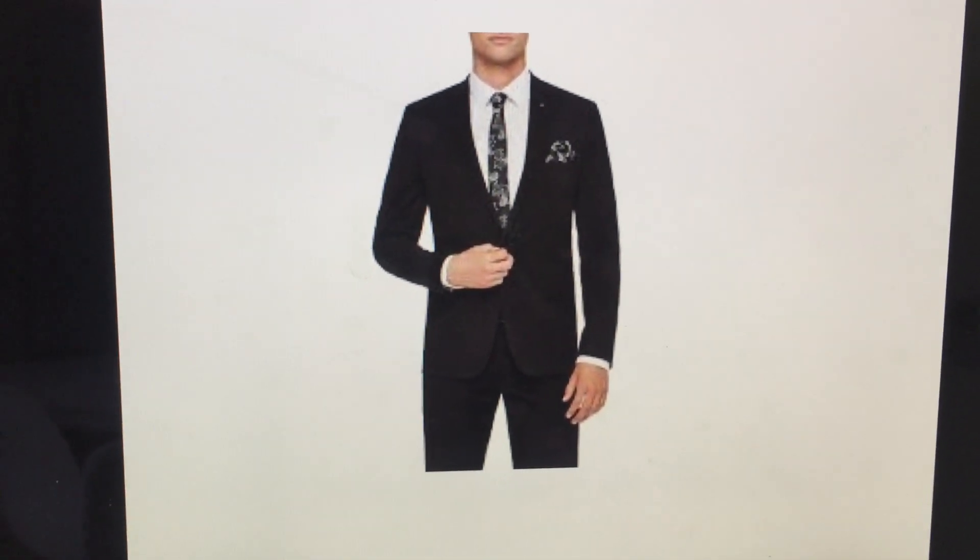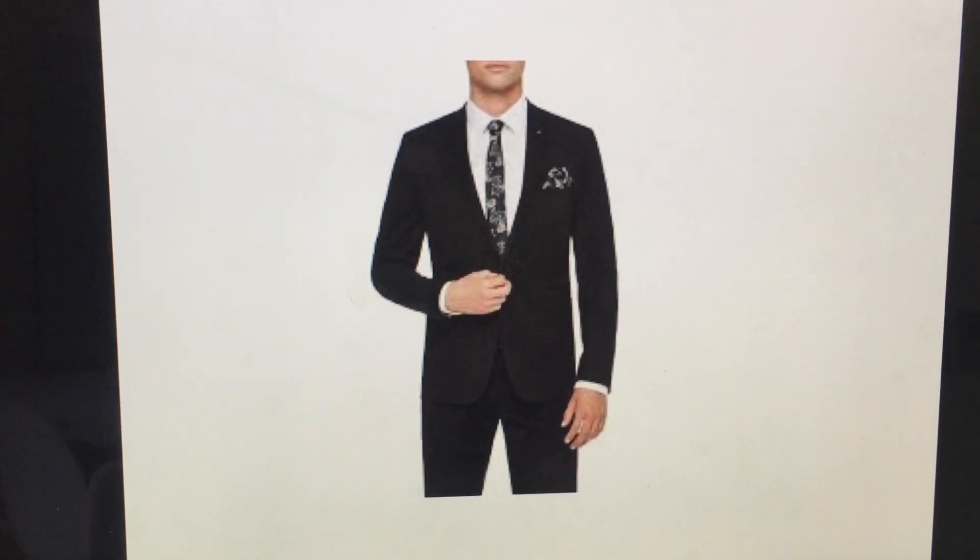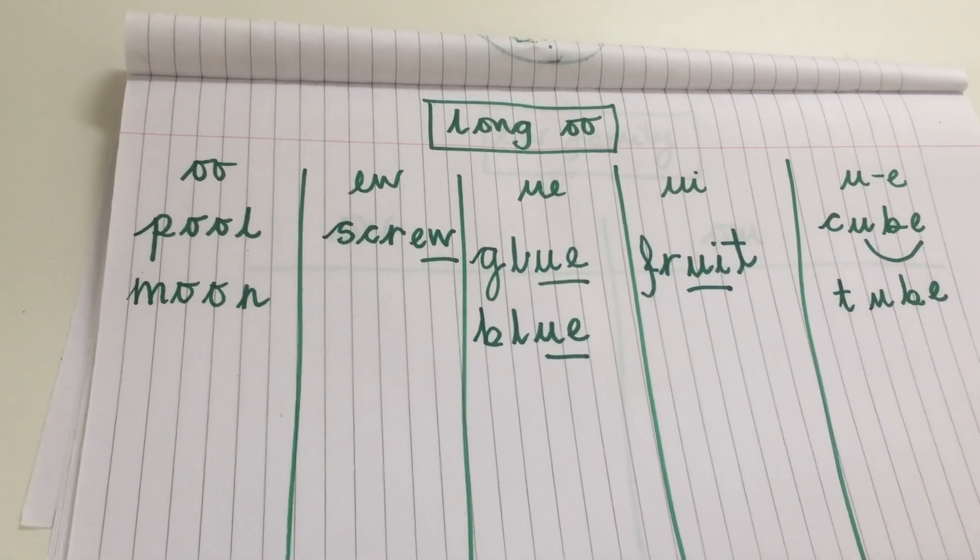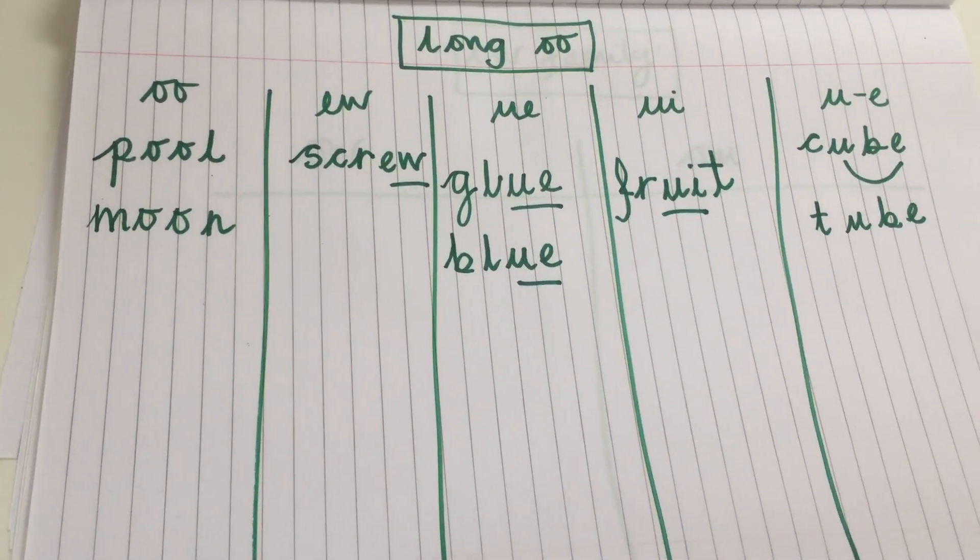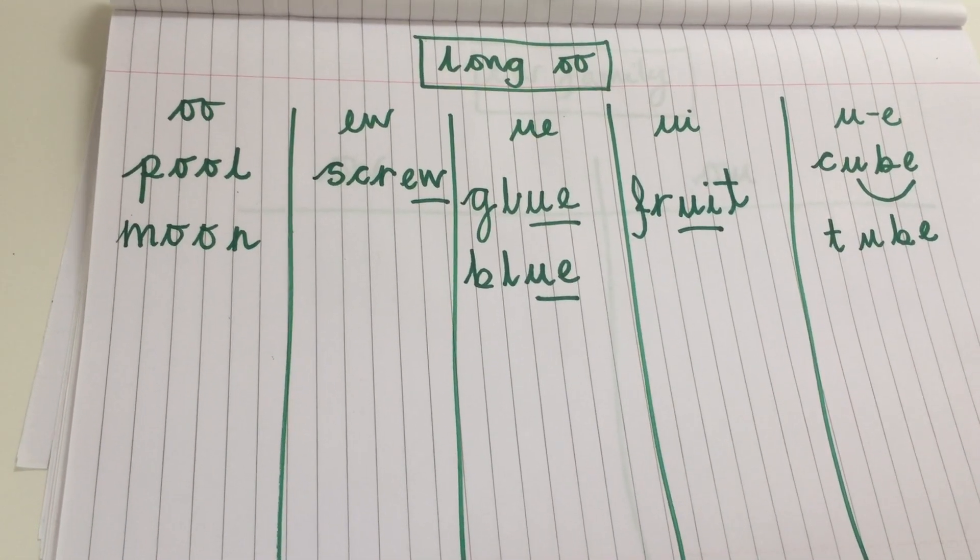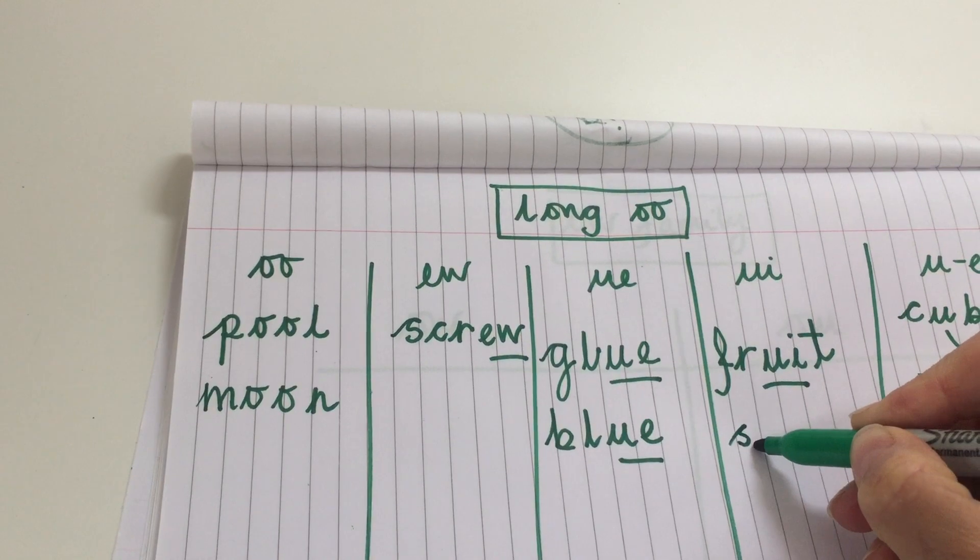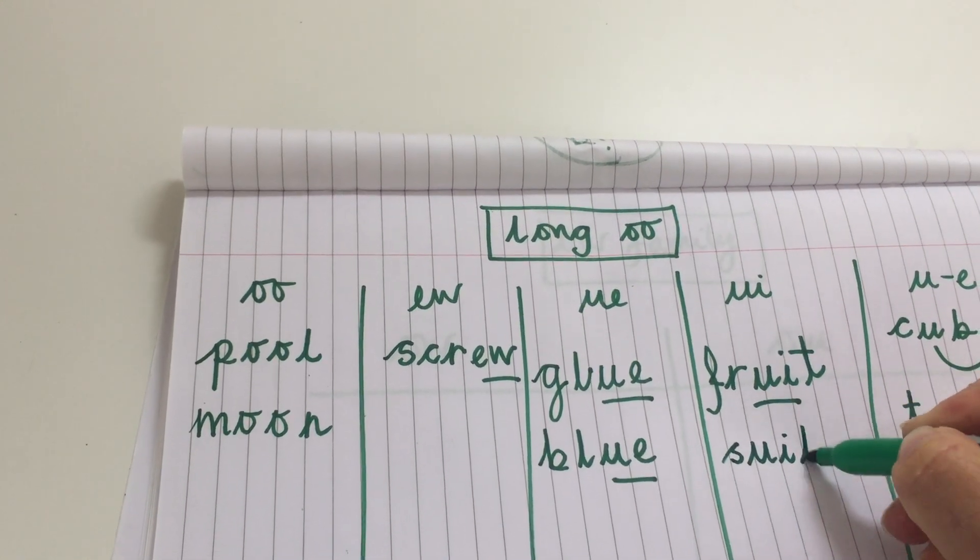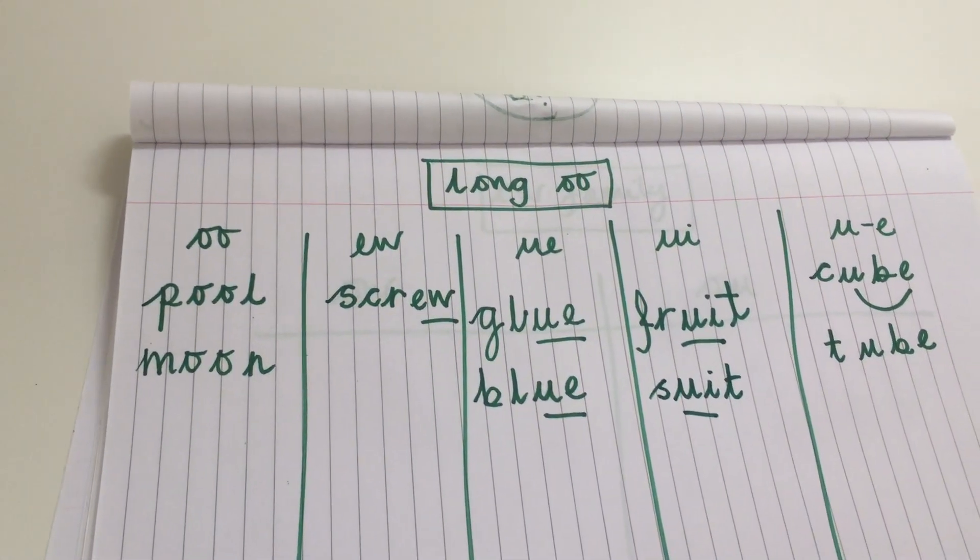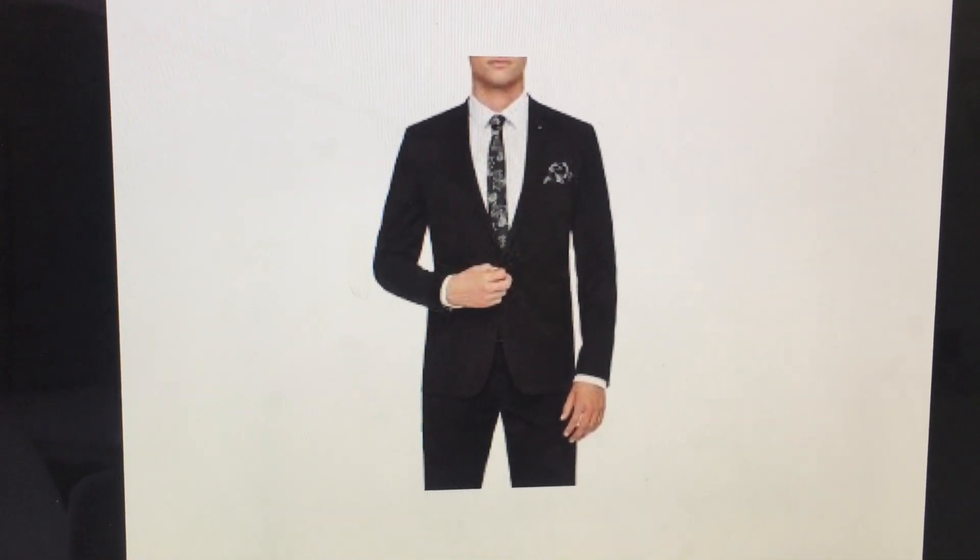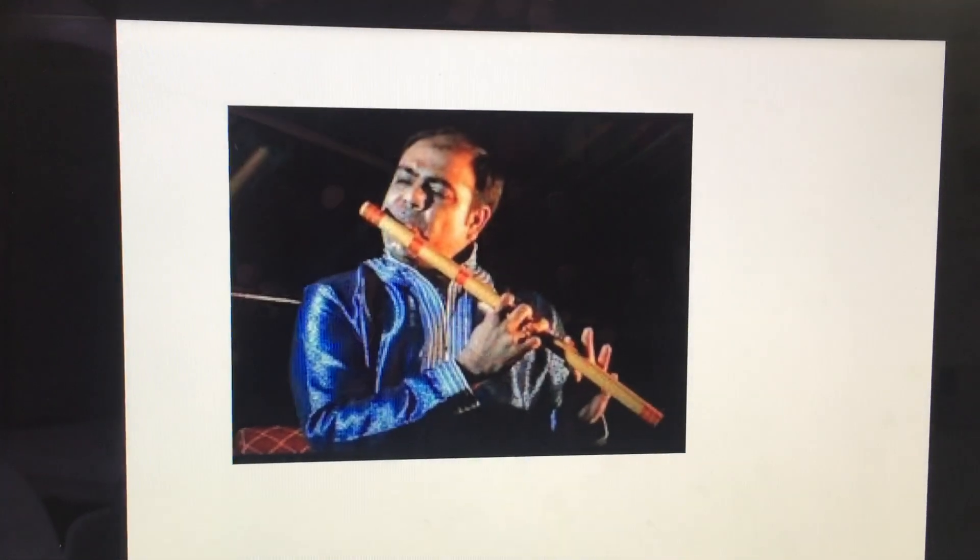This man is wearing a very smart suit. Suit. S, oo, T. Suit. If you've read the smartest giant in town, he has a very smart suit. Well he starts off with one. And it's the U and the I. S, oo, T. Suit. Another tricky one. Fantastic. Phonics is getting better and better every single time you watch one of these videos.